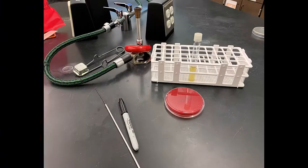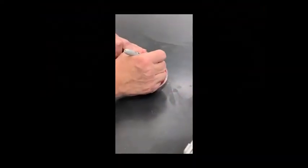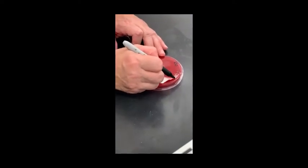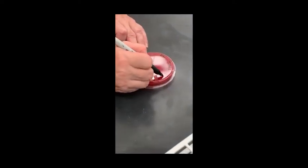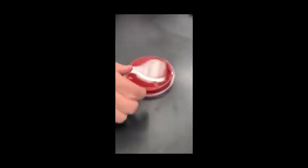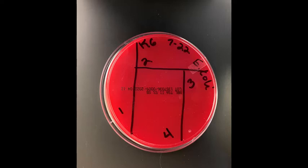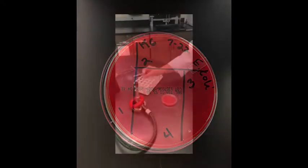In this streak plate demo, we have a broth sample of mixed bacteria. I am going to start by labeling the plate on the bottom. Some microbiologists like to divide the plate into sections to make the streaking easier.